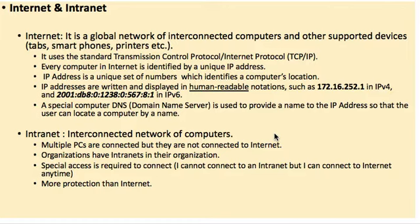Internet is a global network of interconnected computers. It uses TCP/IP — Transmission Control Protocol and Internet Protocol. Every computer on the internet is identified by a unique IP address. IP addresses are written in human-readable notation; the example shown is in IPv4 format. IPv6 was introduced because the number of network devices kept increasing and IPv4 addresses were insufficient.